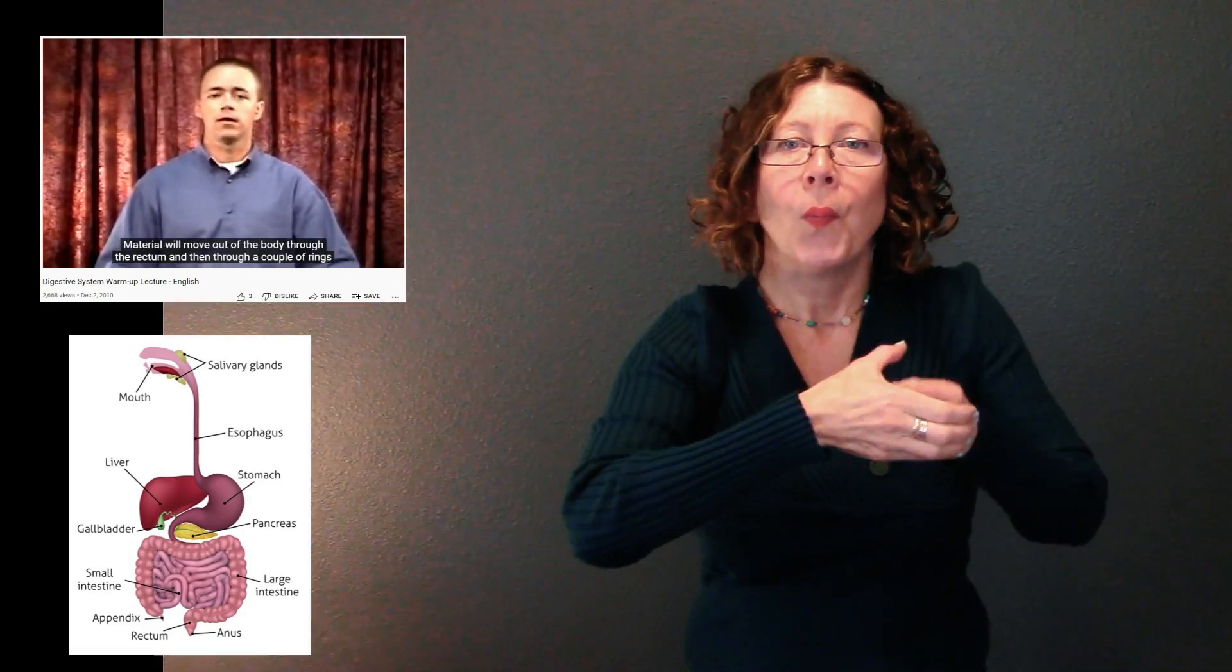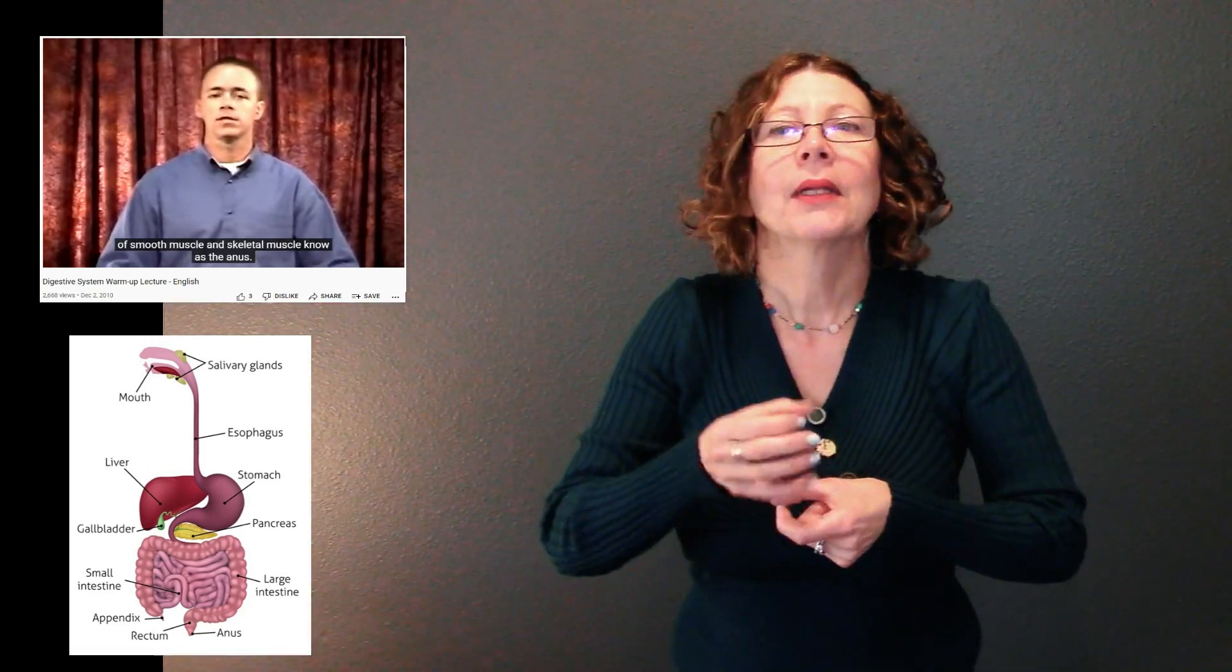Last but not least, there are two rings of muscle at the bottom of the digestive system known as the rectum and anus collectively. The material will move out of the body through the rectum and then through a couple of rings of smooth muscle and skeletal muscle known as the anus.